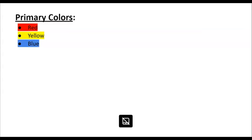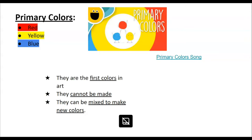We're going to focus on the two basic groups of colors. The primary colors are one group: red, yellow, and blue. We've been learning about the primary colors since kindergarten — they are the very first colors in art. You have to have them before you can do anything; you can't make these colors. If you don't have them, where do you get them? At the store. And you can use the primary colors to make new colors.